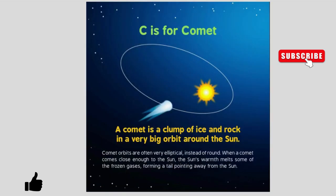C is for comets. A comet is a clump of ice and rock in a very big orbit around the Sun. Comet orbits are often very elliptical instead of round. When a comet comes close enough to the Sun, the Sun's warmth melts some of the frozen gases, forming a tail pointing away from the Sun.